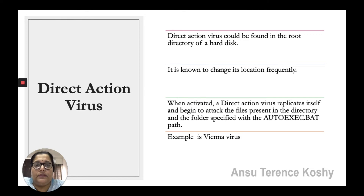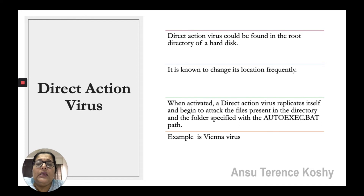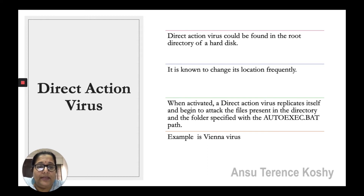Next is direct action virus. It is found in the root directory of the hard disk — the main directory. It is known to change its location frequently, making it very difficult to trace. When activated, a direct action virus replicates itself and begins to attack the files present in the directory and folder specified with the AUTOEXEC.BAT path. The example is the Vienna virus.